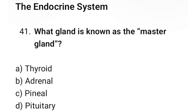Question number 41: What gland is known as the master gland? The correct option is D. Pituitary.